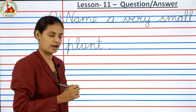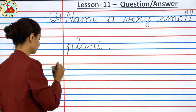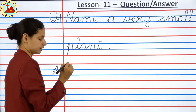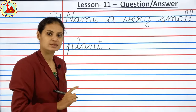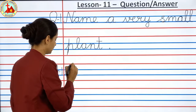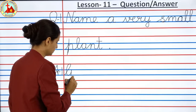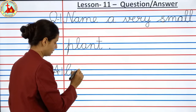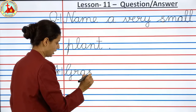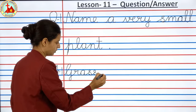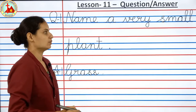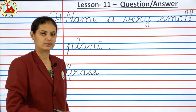The answer is grass. Answer number 1. What is the spelling of grass? G, R, A, double S. First letter cursive capital: G, R, A, double S. Grass. Full stop. Name a very small plant. Answer is grass.